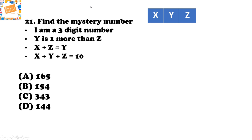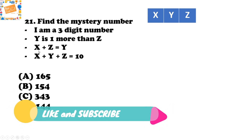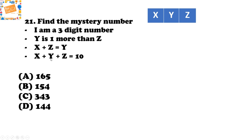The first question is: Find the mystery number. I am a three-digit number. Y is one more than Z. X plus Z equals Y. X plus Y plus Z equals 10. Here, X is the digit in the hundreds place, Y is the digit in the tens place, and Z is the digit in the ones place. The options are: A) 165, B) 154, C) 343, or D) 144. Time starts now!